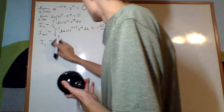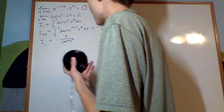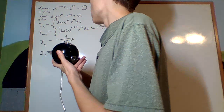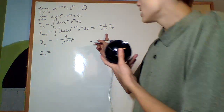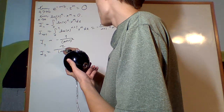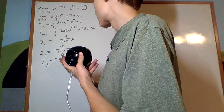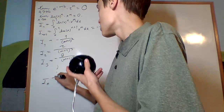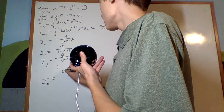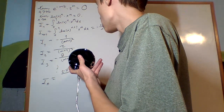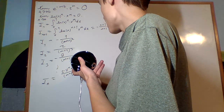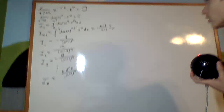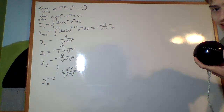So I_1 equals negative 1 over (m+1) squared. Then I_2, using the recursion formula, is negative 2 over (m+1) times that, giving negative 2 over (m+1) cubed. I_3 is then negative 3 times it over that. Continuing down to I_n, you get negative 1 to the n times n factorial over (m+1) to the n+1. This is the general formula, and now using all of this, we're finally able to integrate.